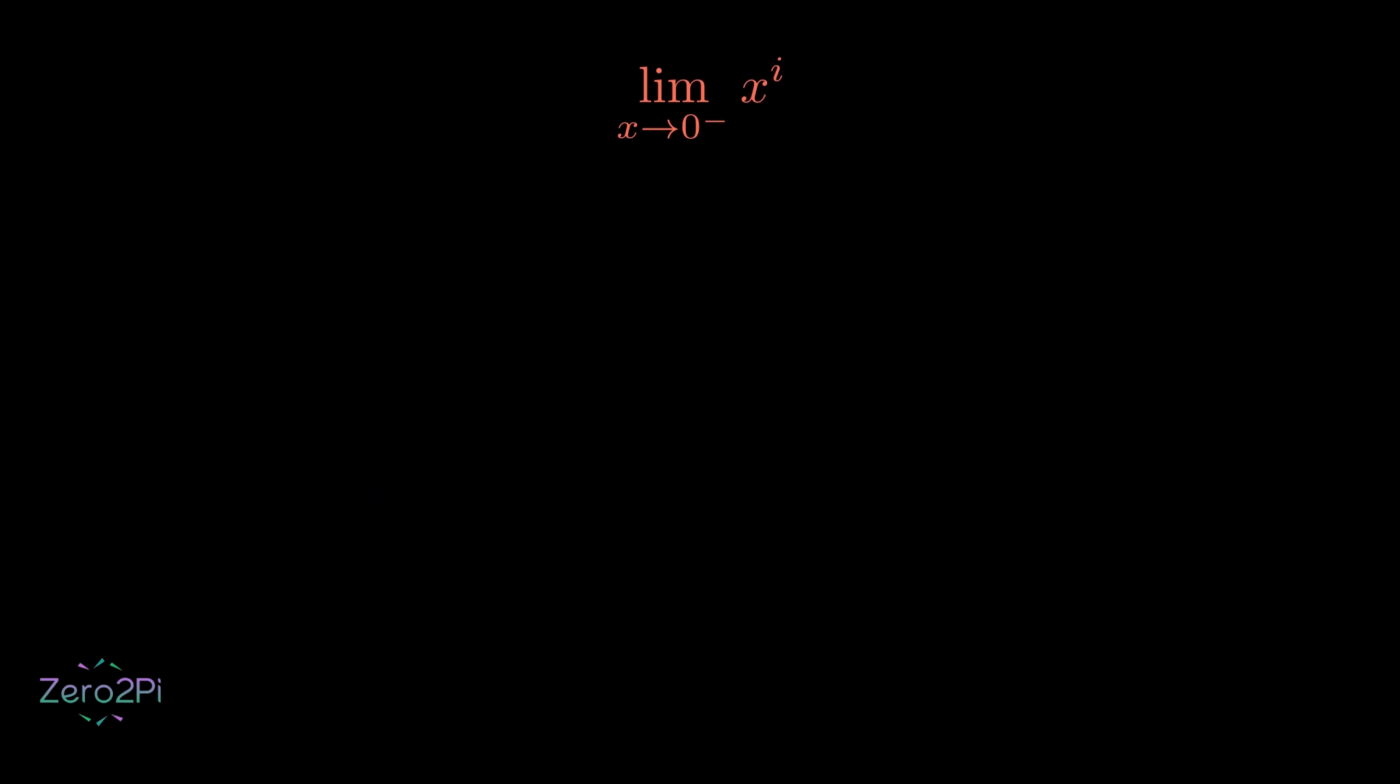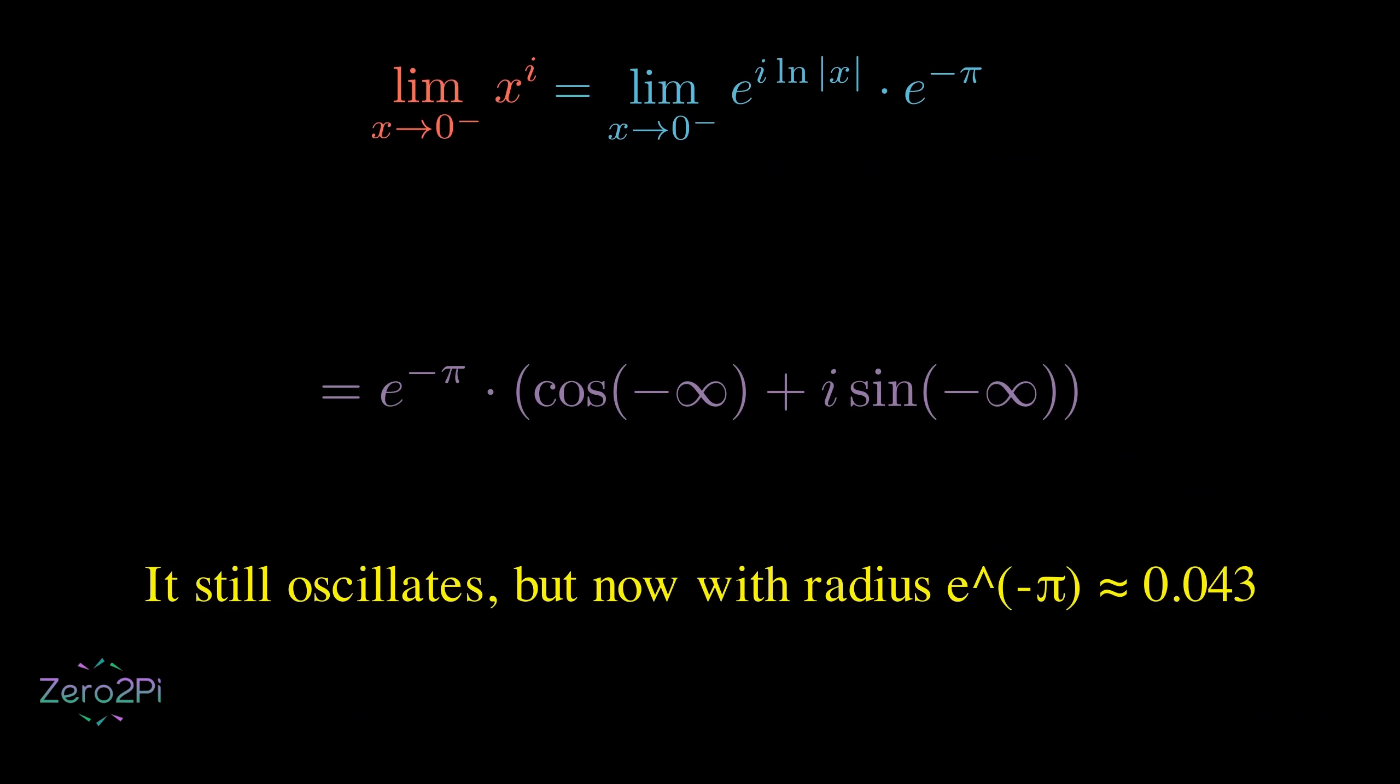If we just stick to the principal branch, we find our familiar oscillating term, the one we saw before when x was positive, but now it's multiplied by a completely new term, e raised to the negative π, and that changes everything, meaning that we're still oscillating, but now with a radius of tiny number, about 0.043.